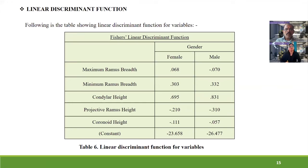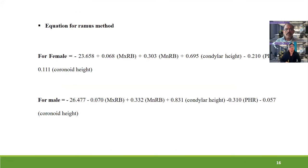A linear discriminant function was performed for the variables to obtain coefficient values with one constant. Using these values, an equation was derived separately for female and male samples. By substituting values into this equation, the sex of an unknown sample can be determined. The sectioning point was found to be 0 — the differentiating point between male and female. If the value is less than 0, the sample is classified as female; if greater than 0, it is classified as male.